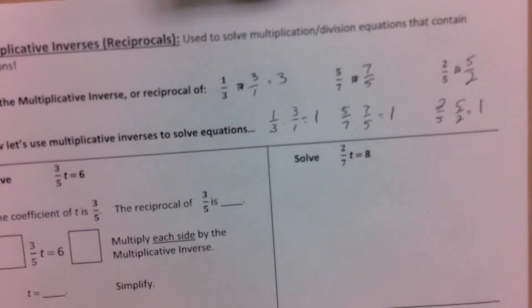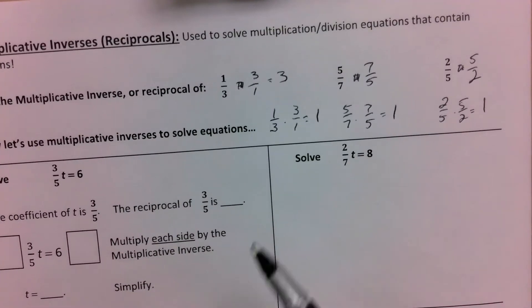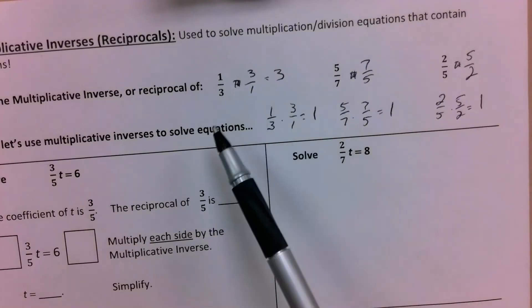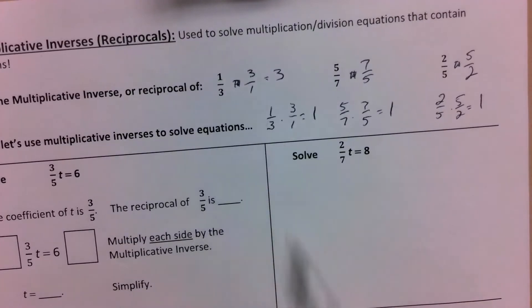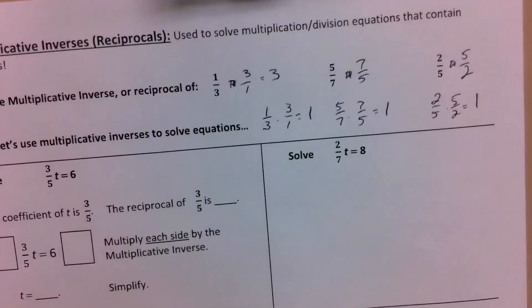That's important because what we want to know is we want to know what one X is equal to when we solve. So what this does is this gets rid of the fraction in front of the X and gets us to one. And you're going to see how that works right here.